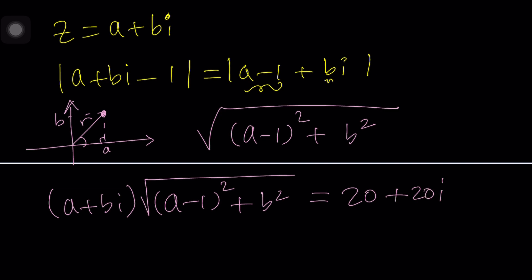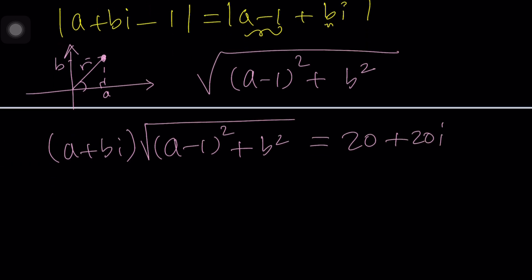Now we're going to distribute this. Since the absolute value is real we can multiply that by a to get the real part for the left hand side and then multiply by b to get the imaginary part. Then from here we get 20 plus 20i.